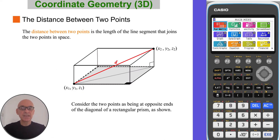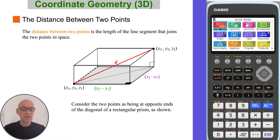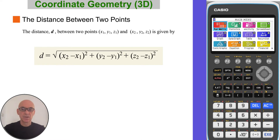Extending this to any two points in space: the distance between those two points will be the length of the line segment that joins them. Consider the two points as being at opposite ends of the diagonal of a rectangular prism, as shown in the diagram. Applying Pythagoras' theorem to the right-angled triangle in the base gives the result shown in blue. Then applying Pythagoras' theorem again to the vertical right-angled triangle leads to the distance formula D, shown here. This formula is given on page 6 of your formula booklet.